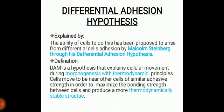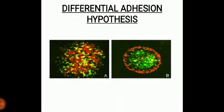The differential adhesion hypothesis explains the ability of cells to sort, and was proposed by Malcolm Steinberg. It is a hypothesis that explains cellular movement during morphogenesis using thermodynamic principles. Cells move toward neighboring cells of similar adhesive strength in order to maximize the bonding strength between cells and produce a more thermodynamically stable structure. In the diagram, the differential adhesion hypothesis is illustrated.